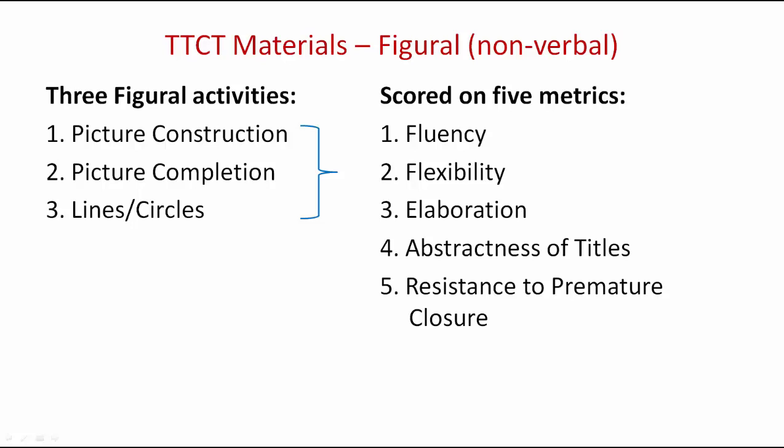These activities are measured using five different metrics. The first two, fluency and flexibility, are the same as are used for the verbal components of the Torrance Test of Creative Thinking. The three new ones are elaboration, abstractness of titles, and resistance to premature closure.